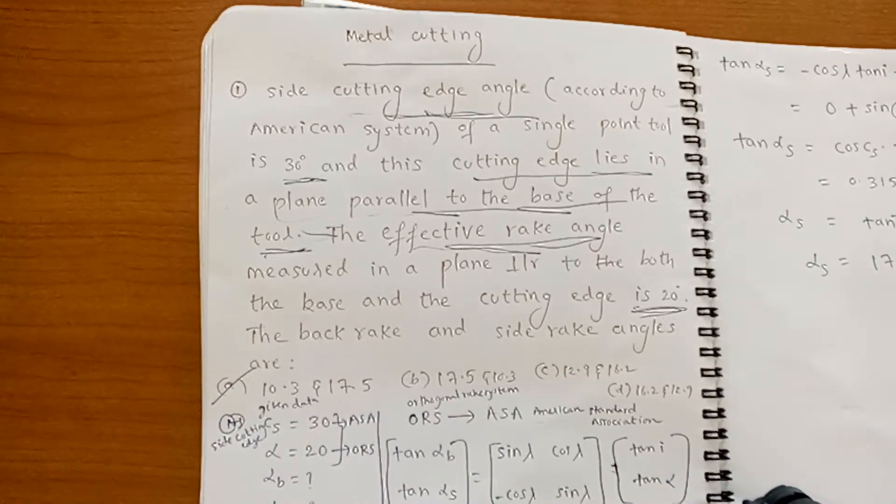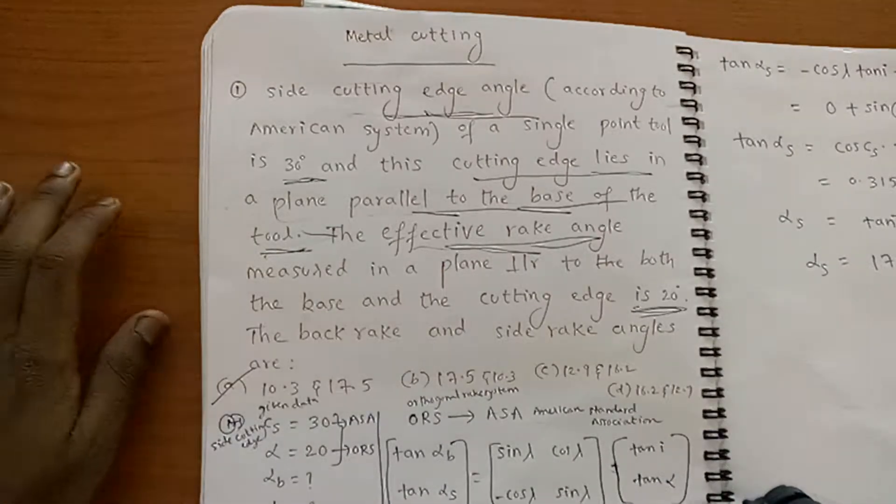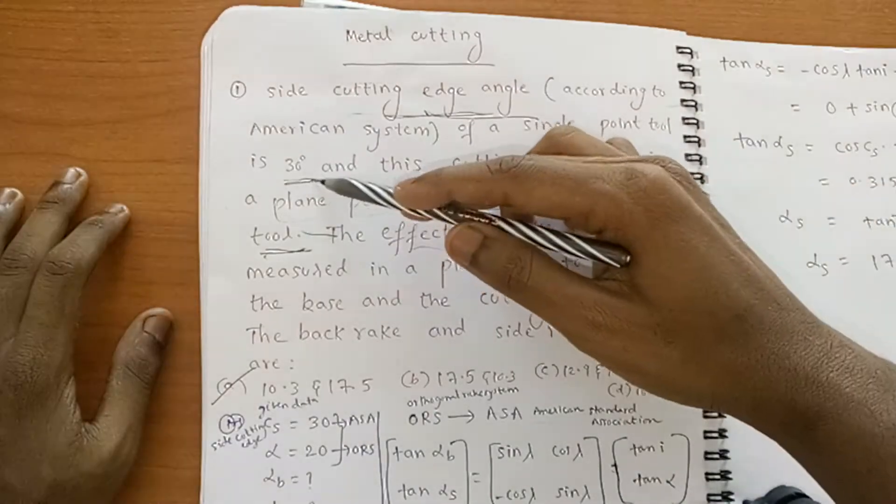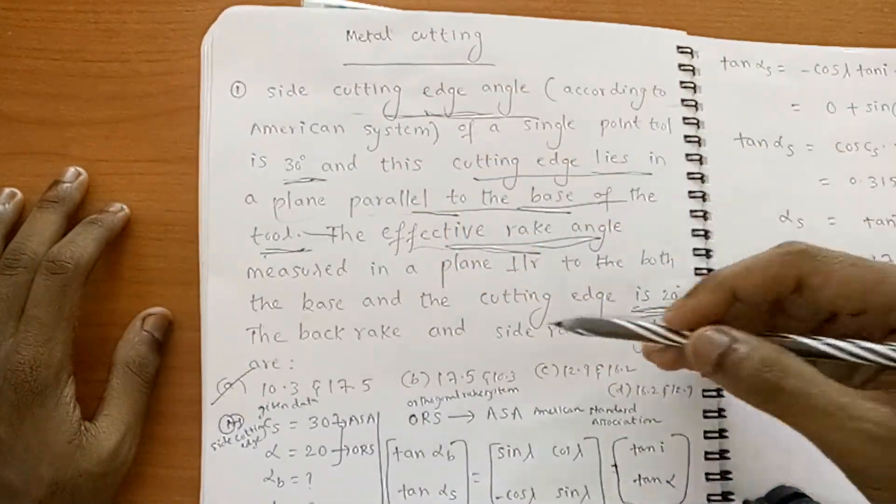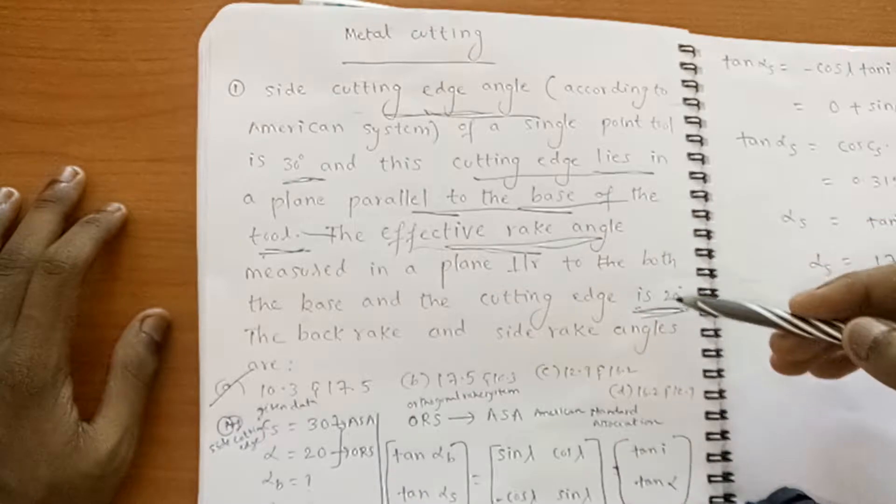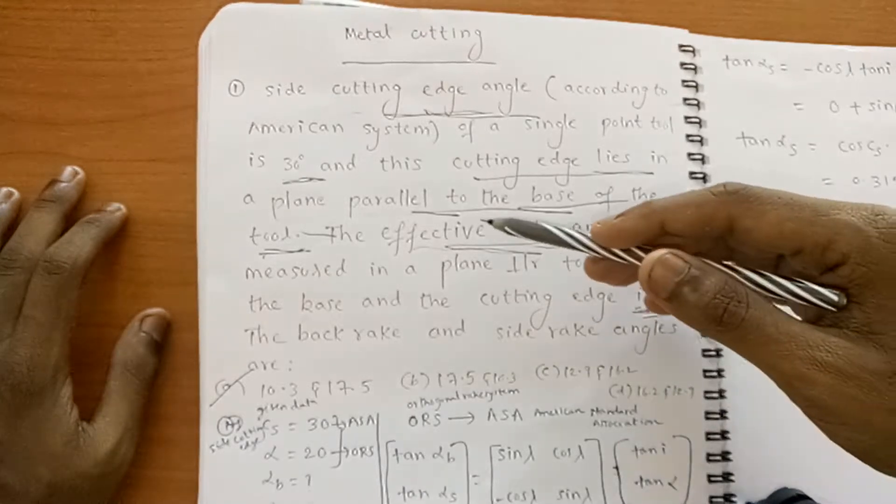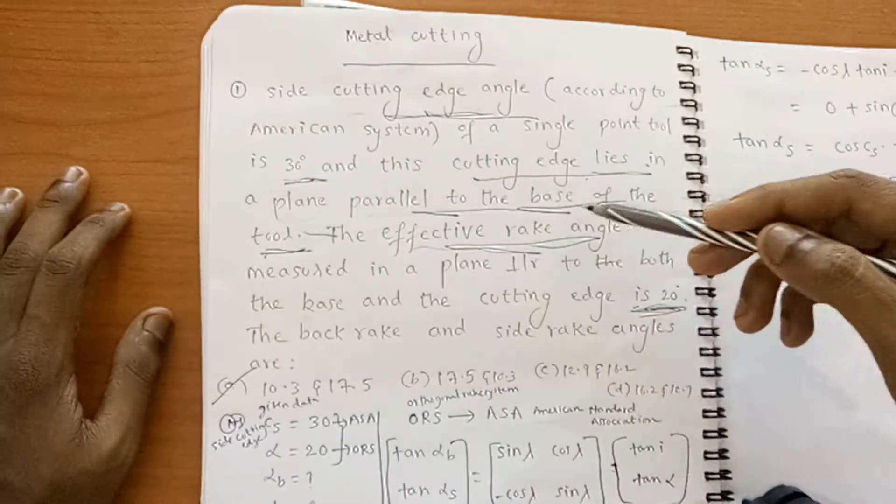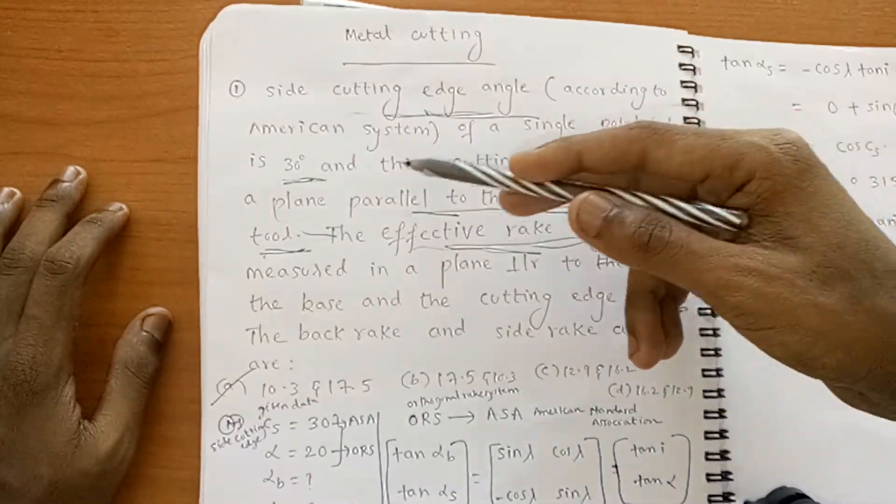This is the first question in metal cutting. Side cutting edge angle equal to 30 degrees and effective rake angle equal to 20 degrees. One more point is cutting edge lies in a plane parallel to the base of the tool. That means inclination equal to 0.